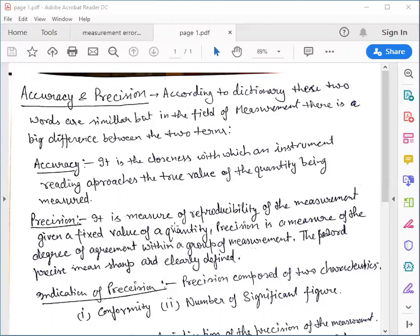Precision means it is measure of reproducibility of the measurement given a fixed value of quantity. Precision is the measure of the degree of agreement within a group of measurements. The word precise means sharp and clearly defined.